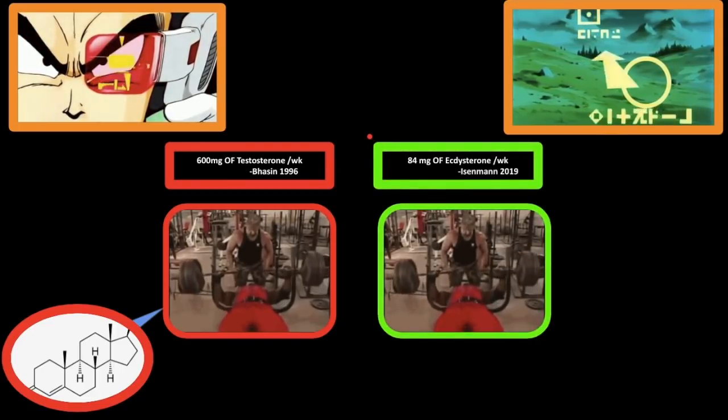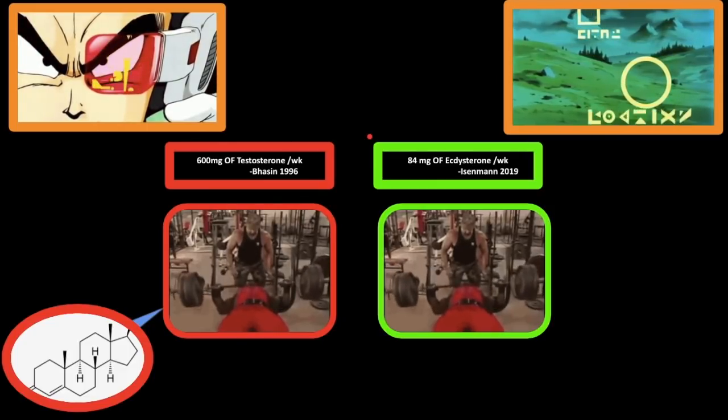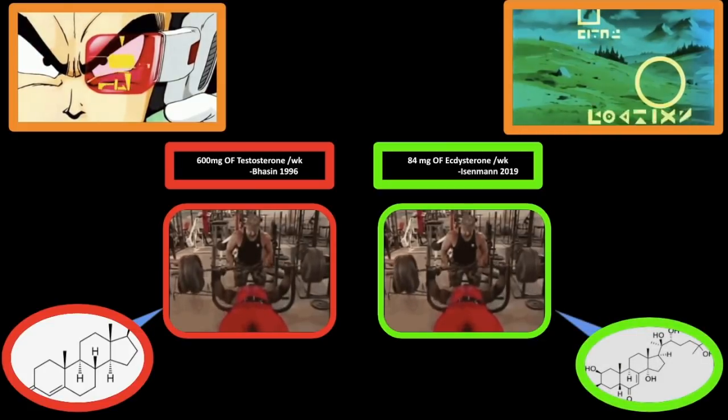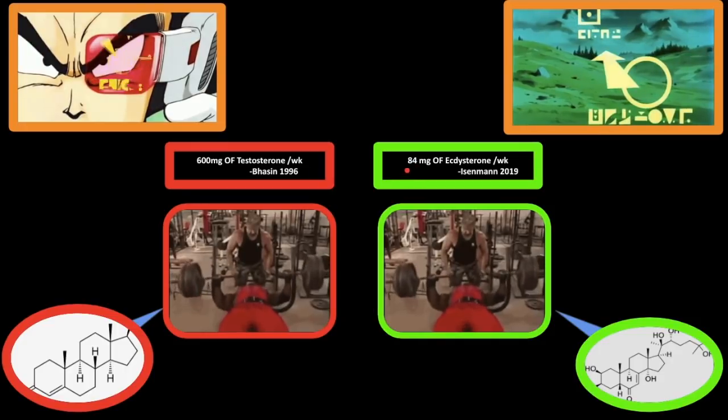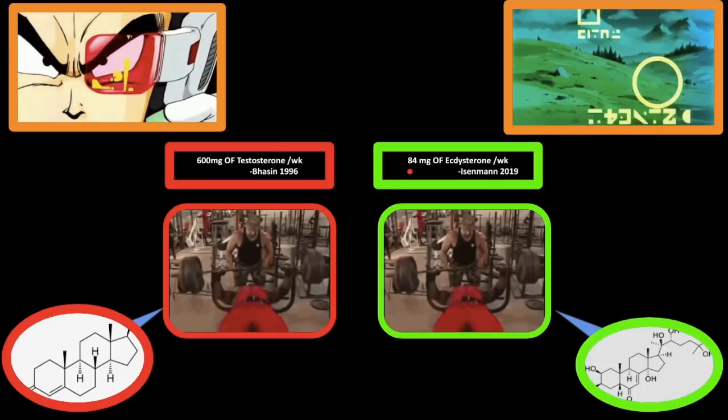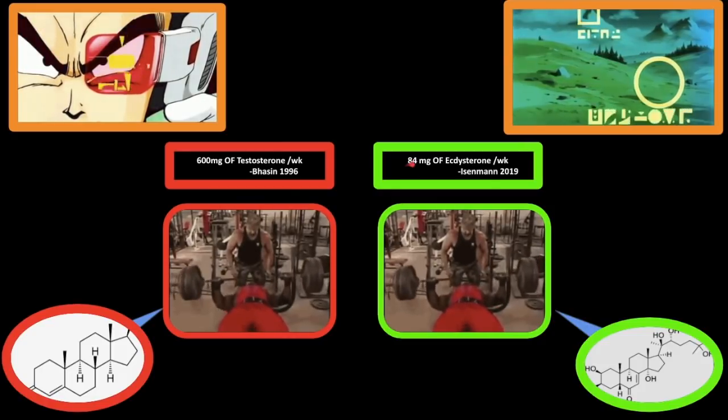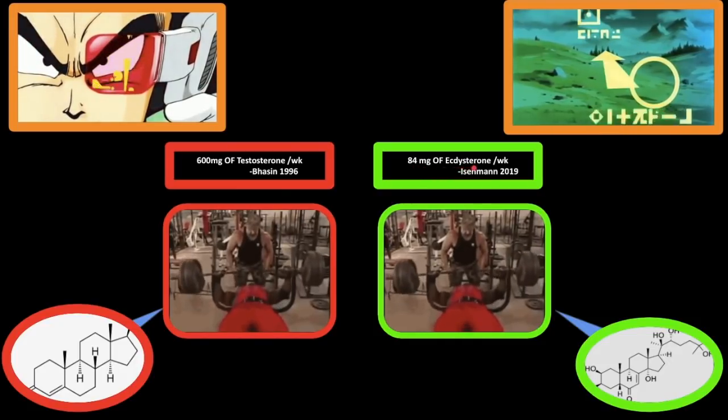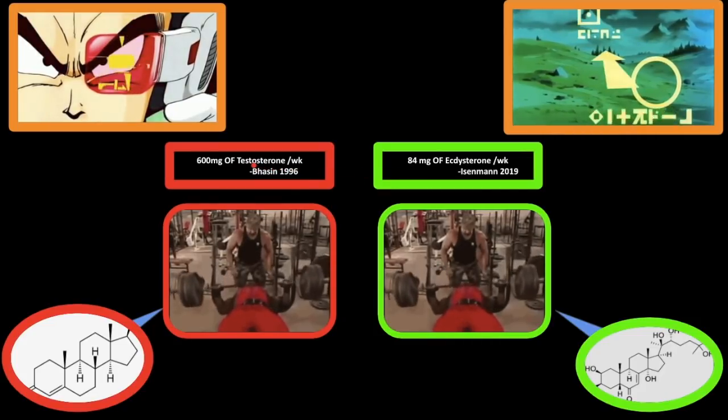So I'm using that study where they're obviously using testosterone. We're going to focus on the group that took 600 milligrams of testosterone, the very high dose group. And then we're going to compare it to the study that I covered last time from Isenmann, which is the best study done on ecdysterone on humans to date. Now remember, on this study I'm using the low dose group that took 12 milligrams of ecdysterone per day, which comes out to 84 milligrams per week, compared to this group which took 600 milligrams of testosterone per week.